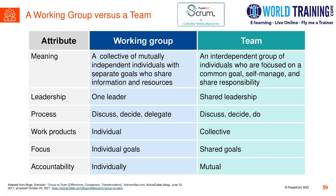Let's evaluate the difference between a working group versus a team, based on various attributes of leadership, processes, work product, focus, and accountability. A working group is a collection of mutually independent individuals with separate goals who share information and resources. A team is an interdependent group of individuals focused on common goals, ensuring self-management and shared responsibility.